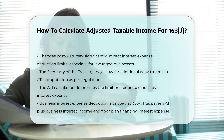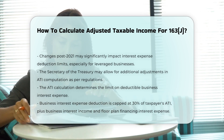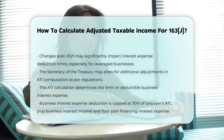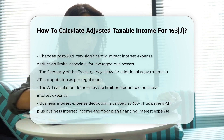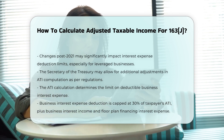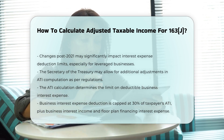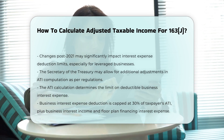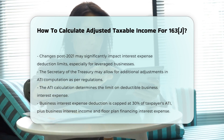Final Adjustments. The Secretary of the Treasury may provide additional adjustments to be made in computing ATI, but these must be in accordance with the regulations under Section 163(j).